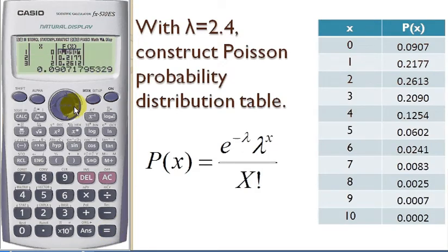And the calculator will return you the table of Poisson probability when x is 0, 1, 2, 3, 4, 5, 6, 7, 8, 9, and 10.